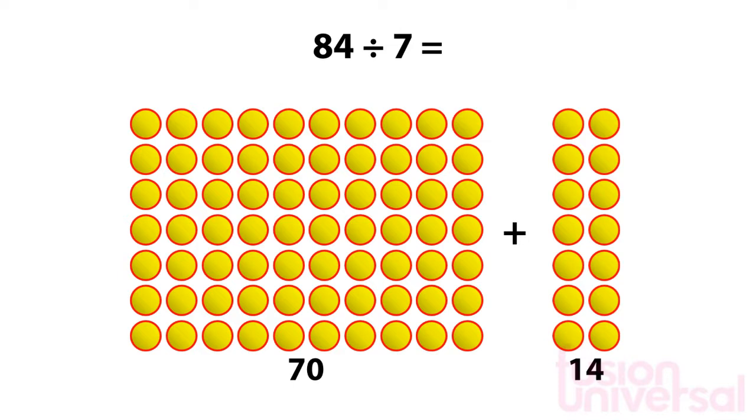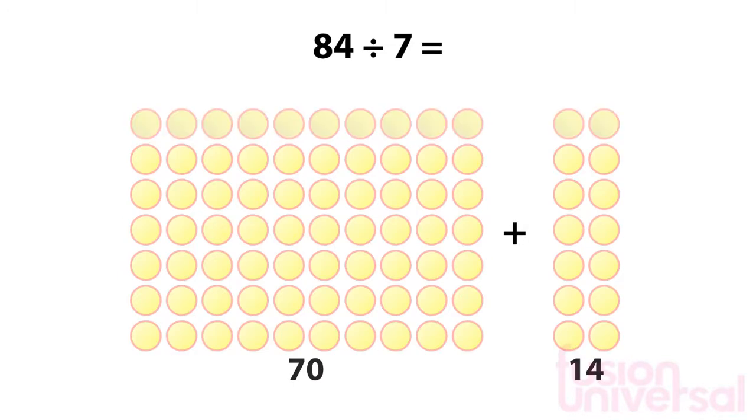To find the answer, all we need to do is count the number of circles in a single row. In the first group of circles, we can count 10 circles in each row. In the second group, there are 2.